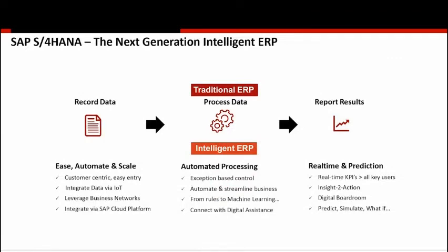This next-generation intelligent ERP differs significantly from a traditional ERP, which was primarily just recording data, processing it, and reporting on results. The intelligent ERP does much more: data entry can happen through integration with IoT and business networks; on the processing level you have automation, streamlined business processes, and machine learning algorithms. On the reporting side, you get real-time KPIs available to all users, along with the ability to predict, simulate, and perform what-if analysis. This is what gives customers a real edge once they move into S/4.